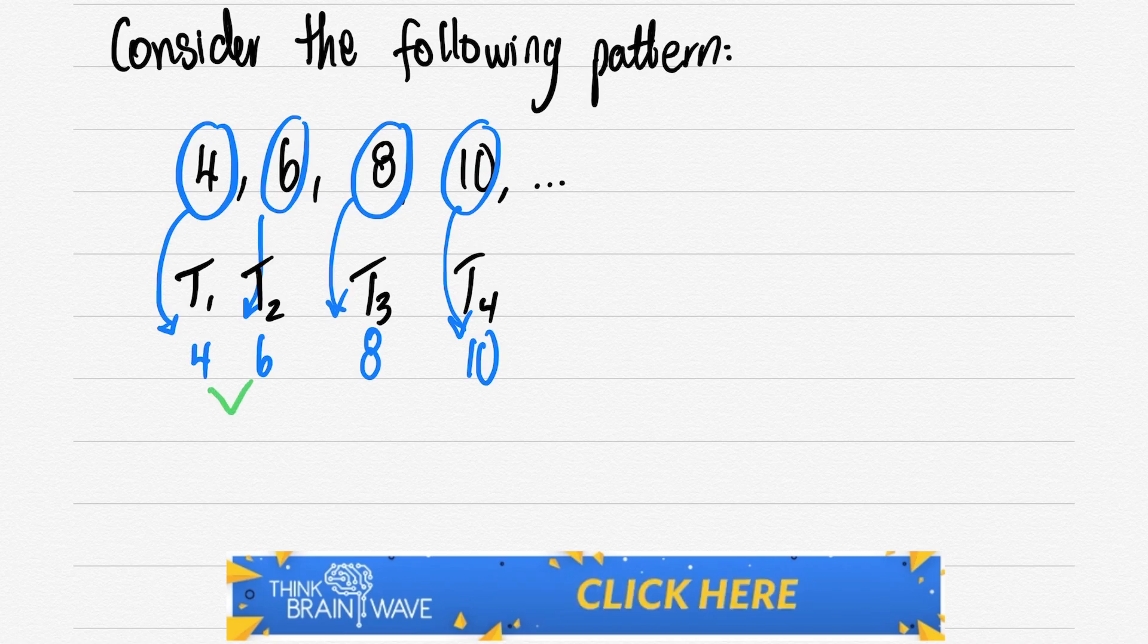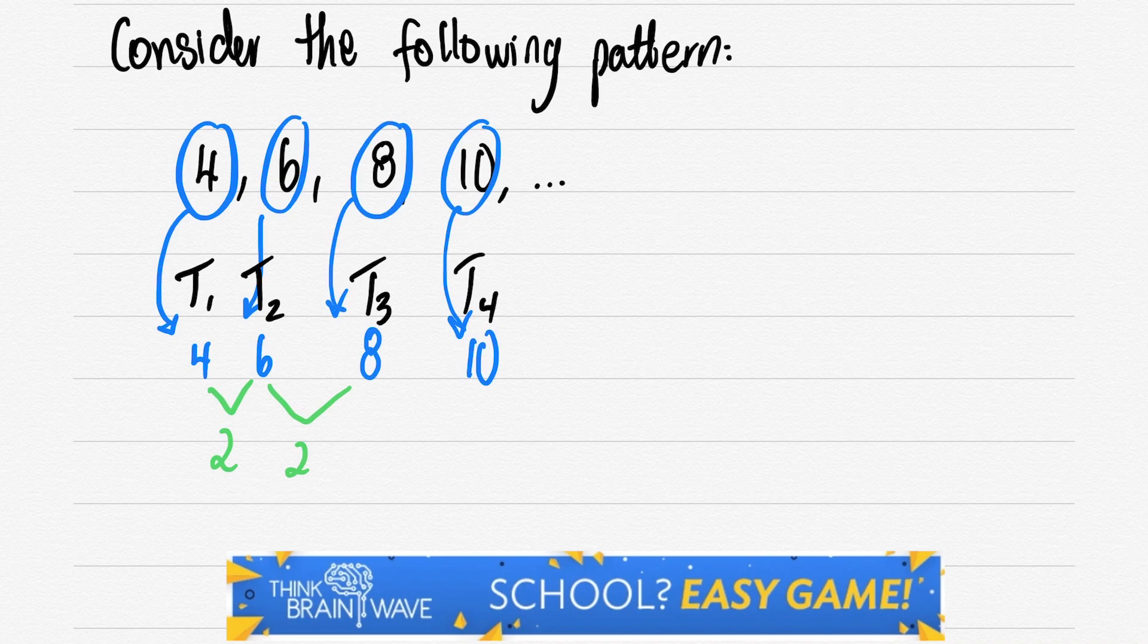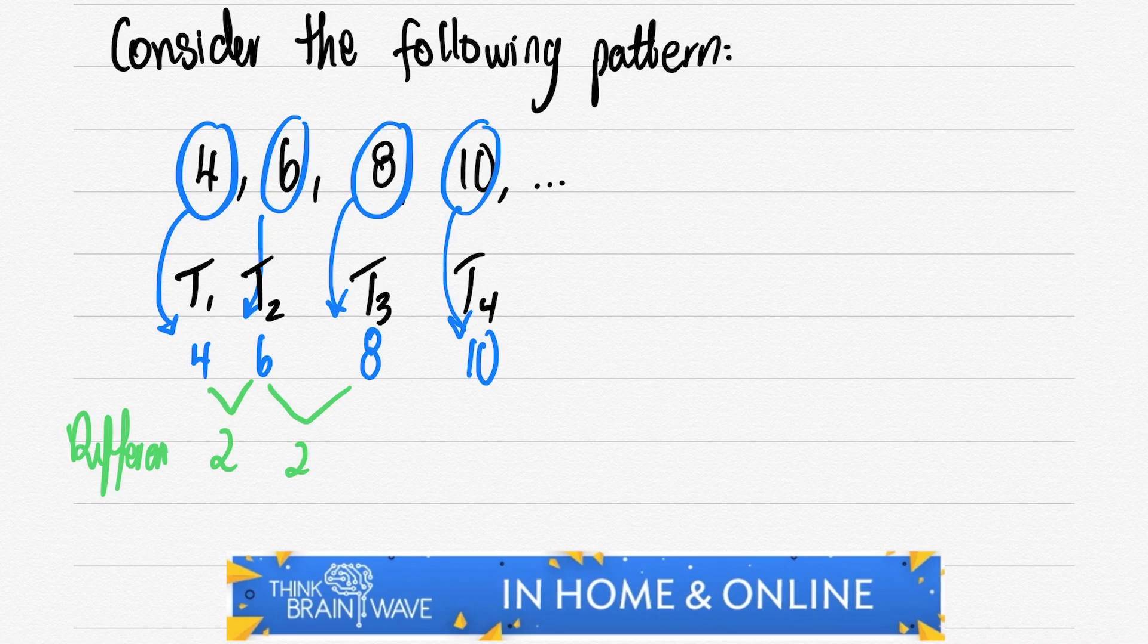You can see there's a constant difference between the numbers of two. This will be our d value. So our difference represented by a d.